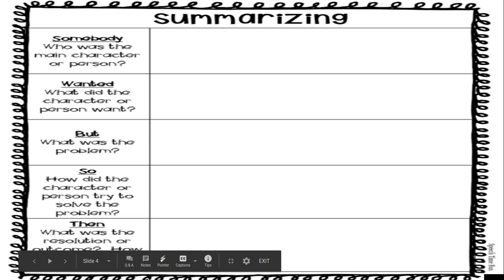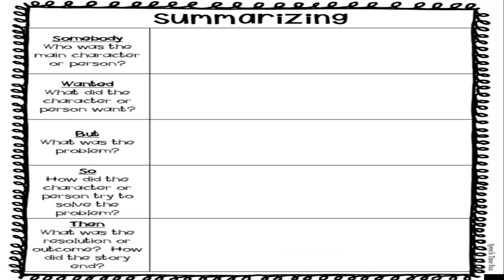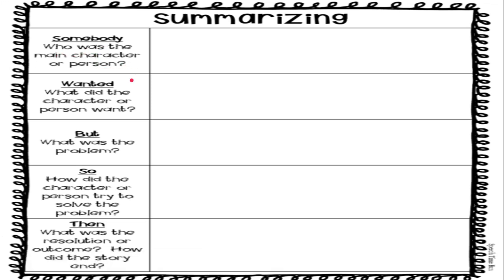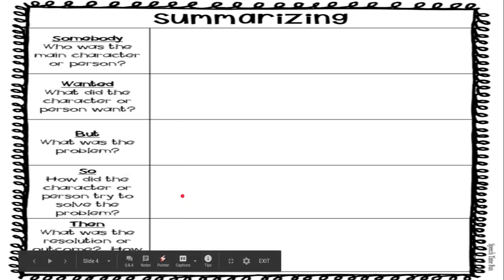We have a brand new graphic organizer — it's the somebody-wanted-but-so-then. You're able to do the somebody part. Somebody: who was the main character or person? I hope you could figure out who the main character is, so you would just put their name right there. And what did that person want? So blank wanted what? But — what was the problem in this story? Next time I will show you how I started this. I know this is brand new, but some of us have done it before. We just haven't done it in a while, so you might be a little rusty. Just do what you can. We can't do the other parts because we haven't gotten to the end of the story yet, so don't worry about those parts.